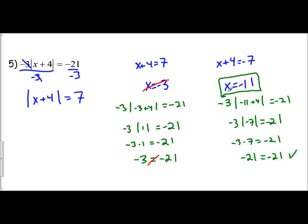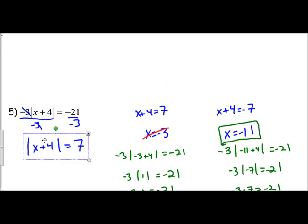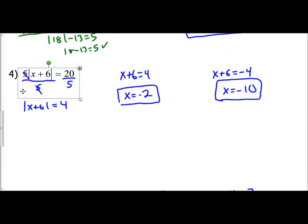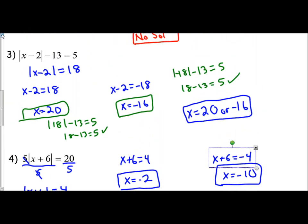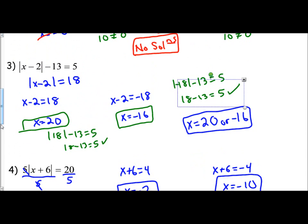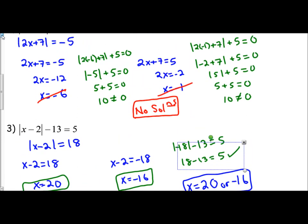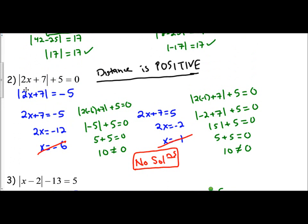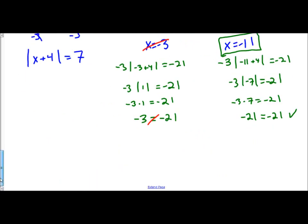In this example one answer works and the other does not, which shows why it's extremely important to check your solutions. The rule is: when solving absolute value equations, get the absolute value by itself first, then break it into two equations, and always check your answers — because as we saw, one may work and one may not, both may work, or neither will work. Always isolate the absolute value first, split into two equations, solve normally, and check your answers.